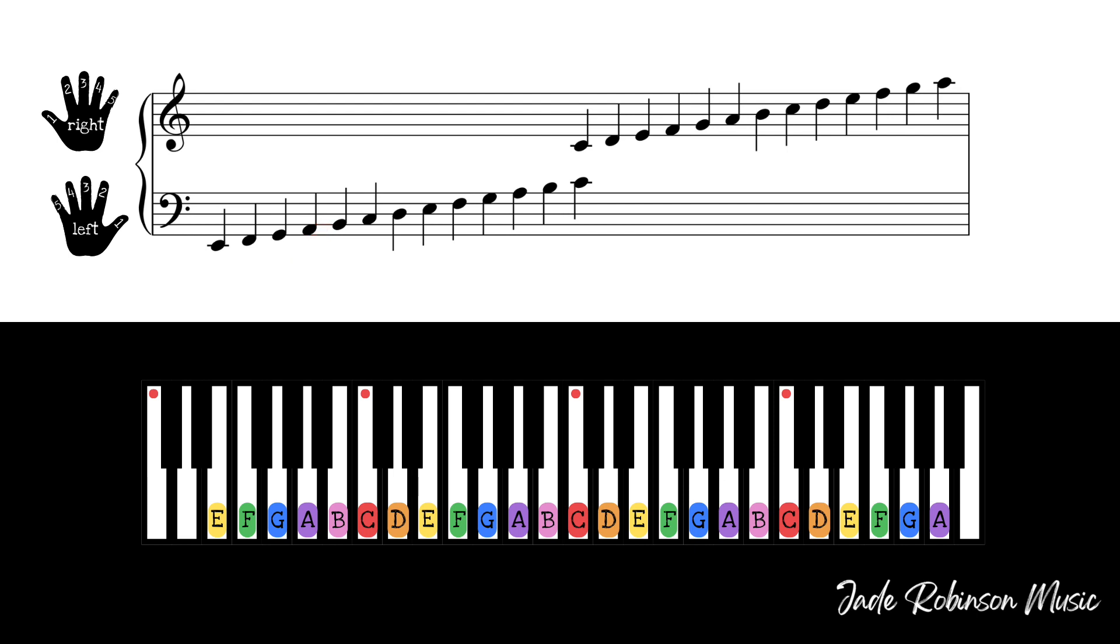When you go beyond the lines of the stave, extra small lines are added to the notes called ledger lines.